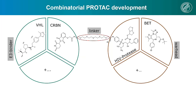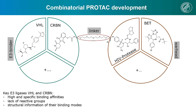PROTAC development until now is mostly combinatorial, by using different E3 binders, linkers of different length and chemistry, linked to a warhead against the protein of interest. Key E3 ligases until now are especially VHL and Cereblon, because high-affinity and specific E3 binders are known, these binders have no reactive groups, and structural information of their binding modes to the E3s are characterized.